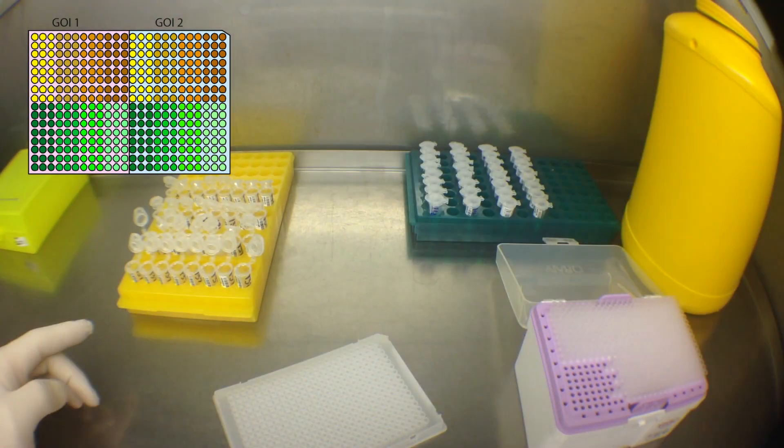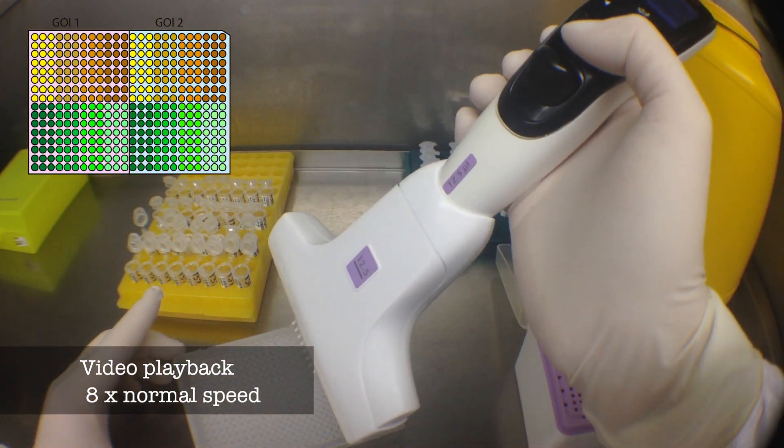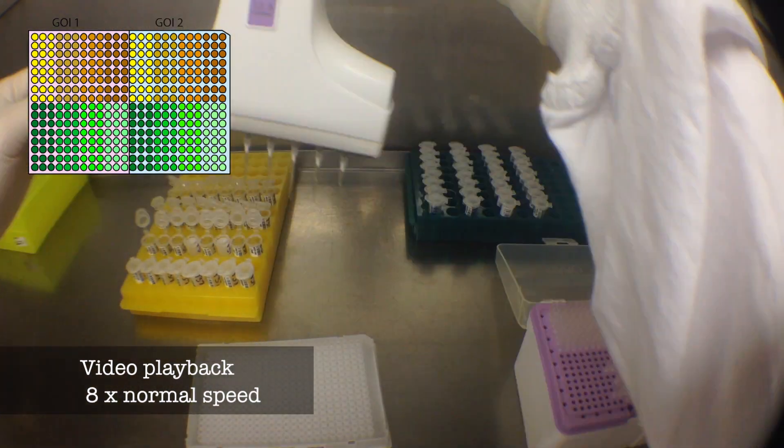Here I'm loading my first set of 8 samples in triplicate for Gene of Interest 1 and then also Gene of Interest 2. Now I'll move on to the next set of 8.